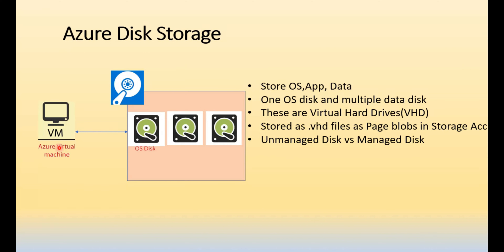The operating system physically has to be stored somewhere — it gets stored in a disk. We call that the OS disk, where the OS gets installed. Apart from the OS, we can have other data files; we can use the same disk or provision additional disks for data, which we call data disks.